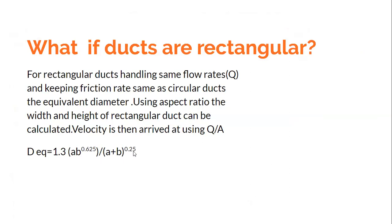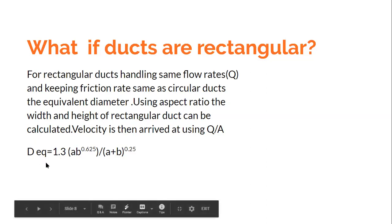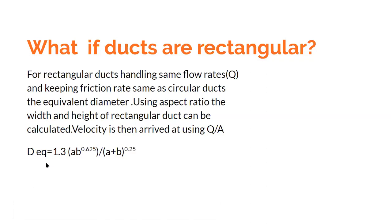The empirical relation is: equivalent diameter = 1.3 × (a × b)^0.65 / (a + b)^0.25, where a and b are the width and height of the rectangular duct. I won't go into the theory behind this expression. For practicing engineers, it is enough to use this expression. Having obtained the equivalent diameter from the friction chart, by fixing either the height or the width, or by fixing the aspect ratio (width-to-height ratio), you can calculate both dimensions a and b of the rectangular duct.